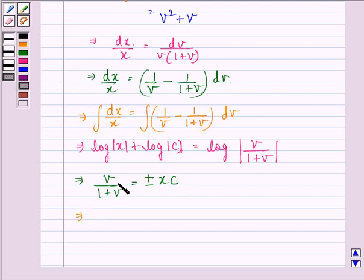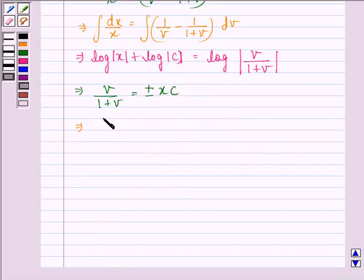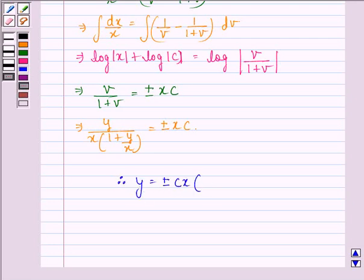Now we put back the value of v as y/x and we get y/(x(1+y/x)) = ±xc. Therefore, y = ±cx(x+y).